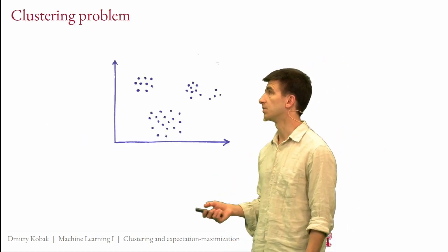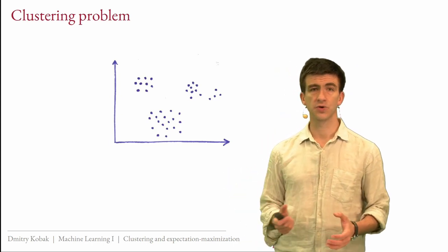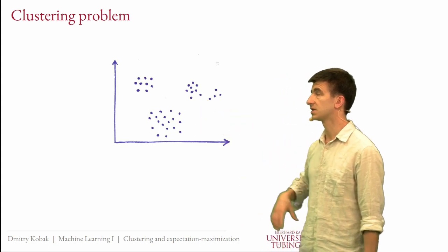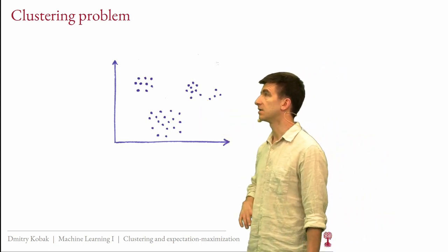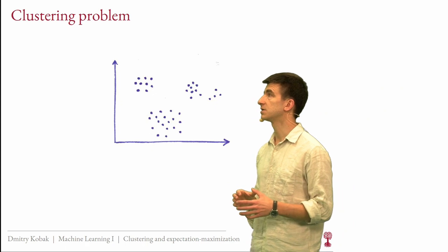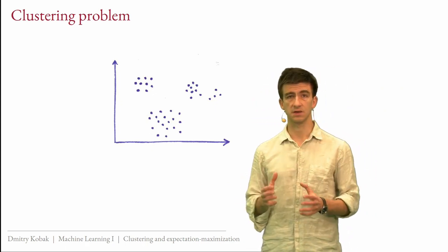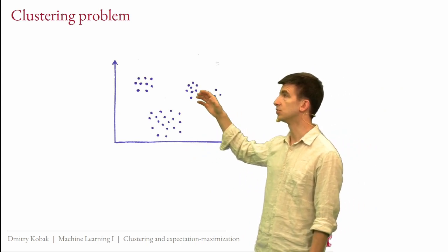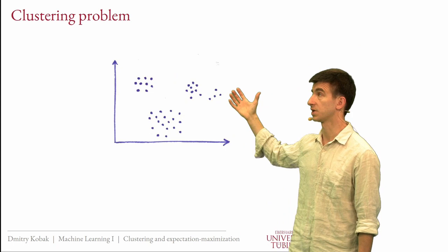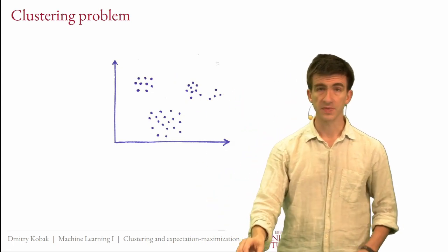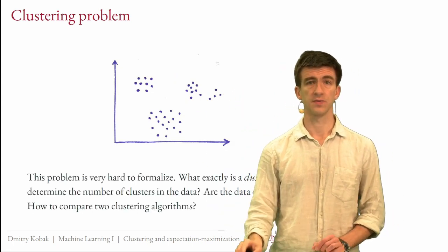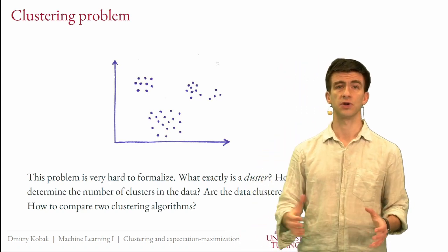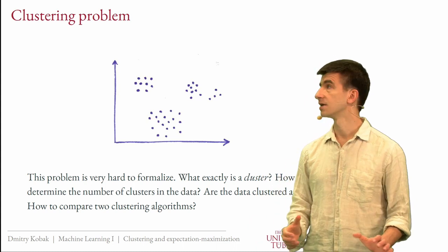So what is a clustering problem? Here is some toy data — a very simple dataset with two variables. These are the points, the samples. In the clustering problem, we want to find if there are groups or clusters in this data. Here it is quite obvious to the human eye that this is a cluster, this is a cluster, this is one cluster, or perhaps two clusters. That is what we want the clustering algorithm to tell us, especially if the data are higher dimensional and we cannot just plot it in 2D.